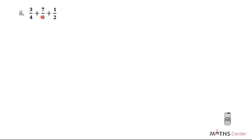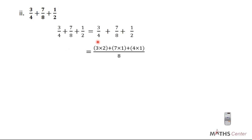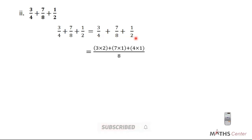This time we are having 3 different terms: 3 over 4 plus 7 over 8 plus 1 over 2. Once again, the first thing that you have to do is to find the least common multiple of the denominators, which are 4, 8, and 2. If you list the multiples, the least common multiple will be 8. If you are finding it difficult to find the LCM, multiply the denominators together — multiply 4 by 8 by 2 and use it as the LCM, then simplify after. But if you can find the LCM, your answer will already be in simplest form. So here, our LCM is 8.